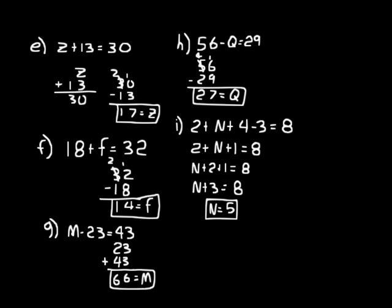Did you see what we did there? We had three numbers on the left side of the equal sign — the 2, the 4, and the 3. We simplified down to just one number, that 3. We changed the order of the numbers; remember, in addition, order does not matter, so that's why we were able to do that. We could have just seen 2 plus N plus 1 and added the 2 and the 1 to make 3, giving us N plus 3 equals 8, so N equals 5. Okay, that's all for Lesson 3.